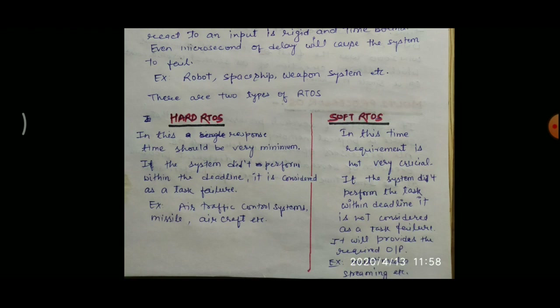There are two types of RTOS. The first one is hard RTOS, in which the response time should be very minimum. If the system did not perform within the deadline, it is considered a task failure. Examples include air traffic control systems, missiles, and aircraft. For instance, if the time for launching a missile is only five seconds and the system takes more than five seconds, then that missile launching is considered a failure because it was not launched within the given time.